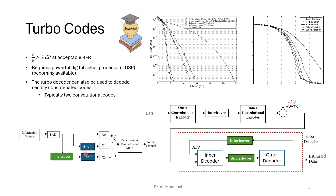The turbo encoder is made of two or more convolutional encoders concatenated together. For this code rate we have one-to-three bits — rate one third. We can also do parallel puncturing where we are selective, or we just take all of them. If we have parallel-to-serial multiplexing, we take all three bits and send them on the channel. That's the transmitter.